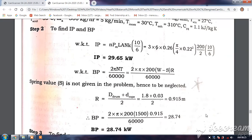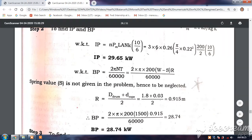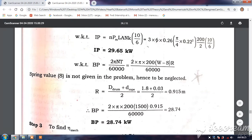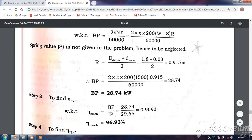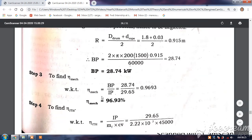Now substituting the values in this equation for BP, we get BP is equal to 28.74 kilowatt. Mechanical efficiency is BP by IP. Substituting the values, we get it is 0.963 or 96.93 percentage.